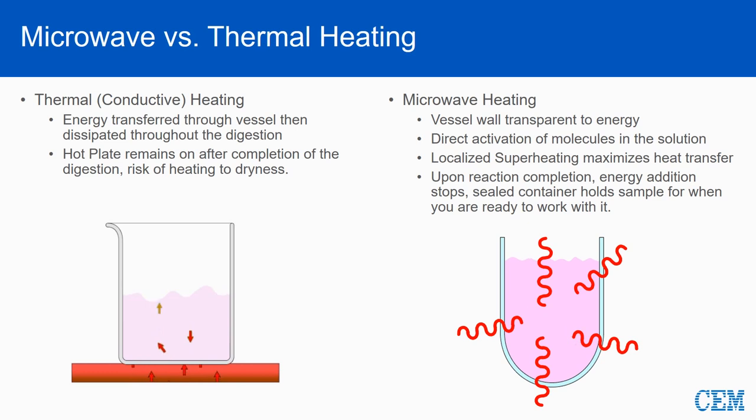Here we see a beaker of liquid being heated on a hot plate. The plate must heat the surface of the container which then heats the next layer, then the next. Finally the heat reaches the liquid layer in direct contact with the glass. This liquid is heated which in turn transfers heat to the next layer. Because the center of the liquid is cooler than the liquid touching the glass, thermal currents are generated. This mixing of the liquid aids in the heating.